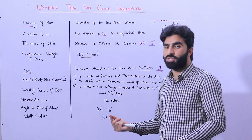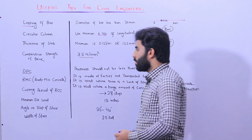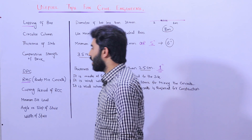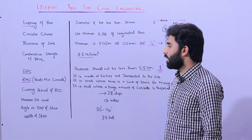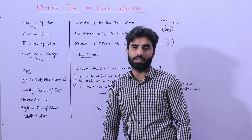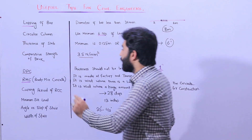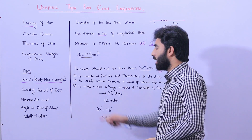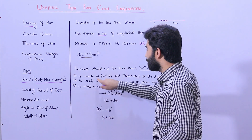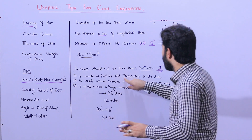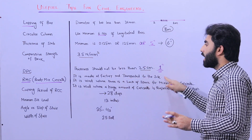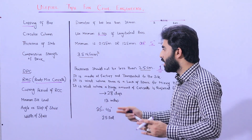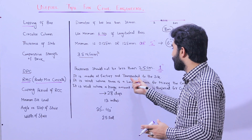The next tip is RMC — Ready Mix Concrete. If someone asks you in an interview or on a construction site, RMC means Ready Mix Concrete. It is made at a factory and transported to the site — we do not make this concrete on the construction site itself.